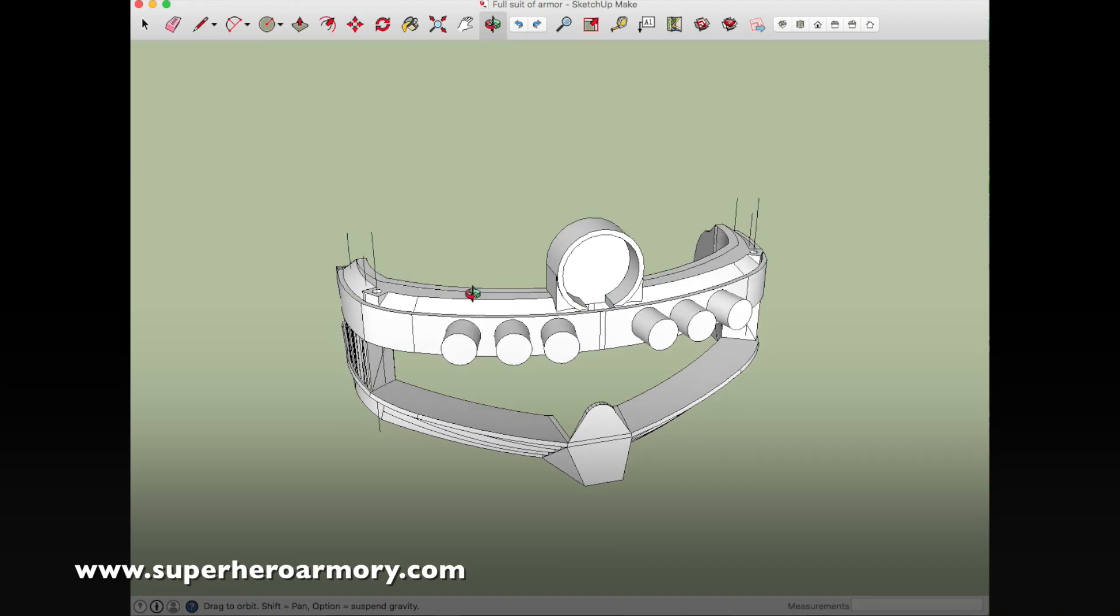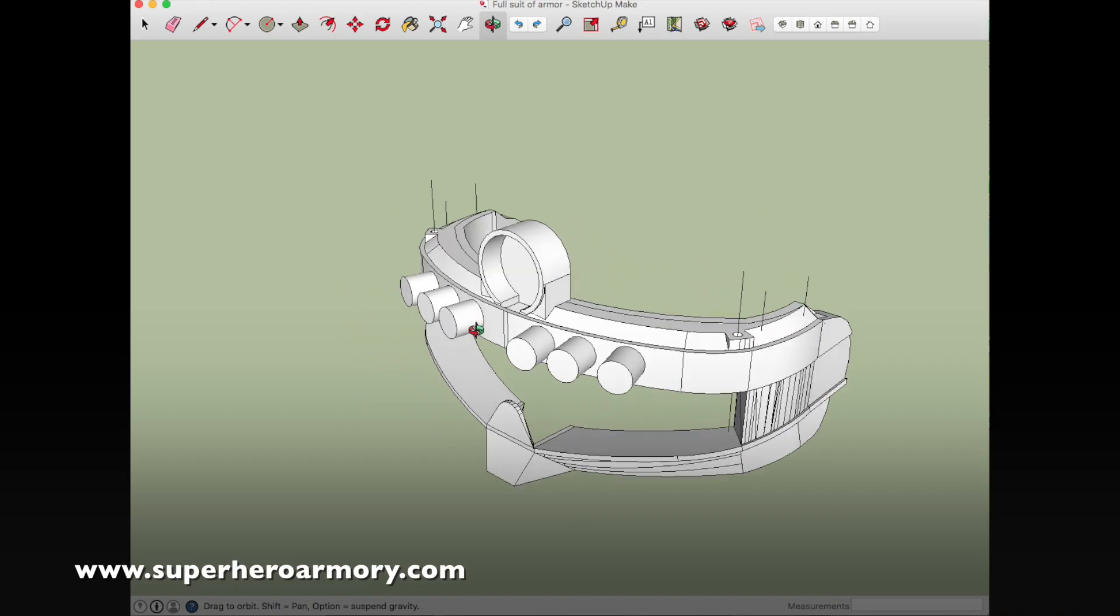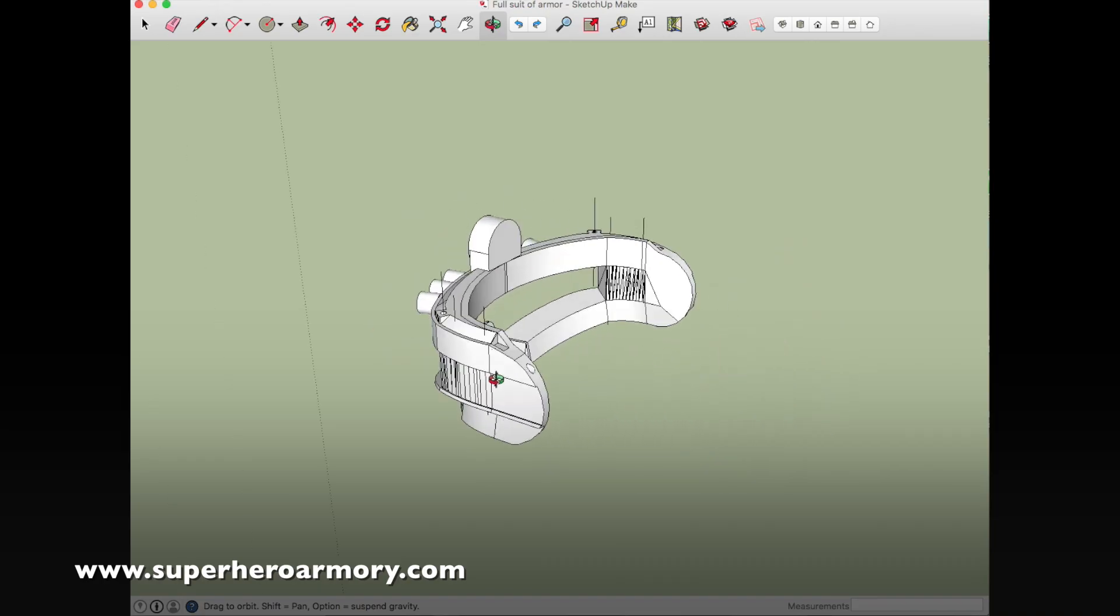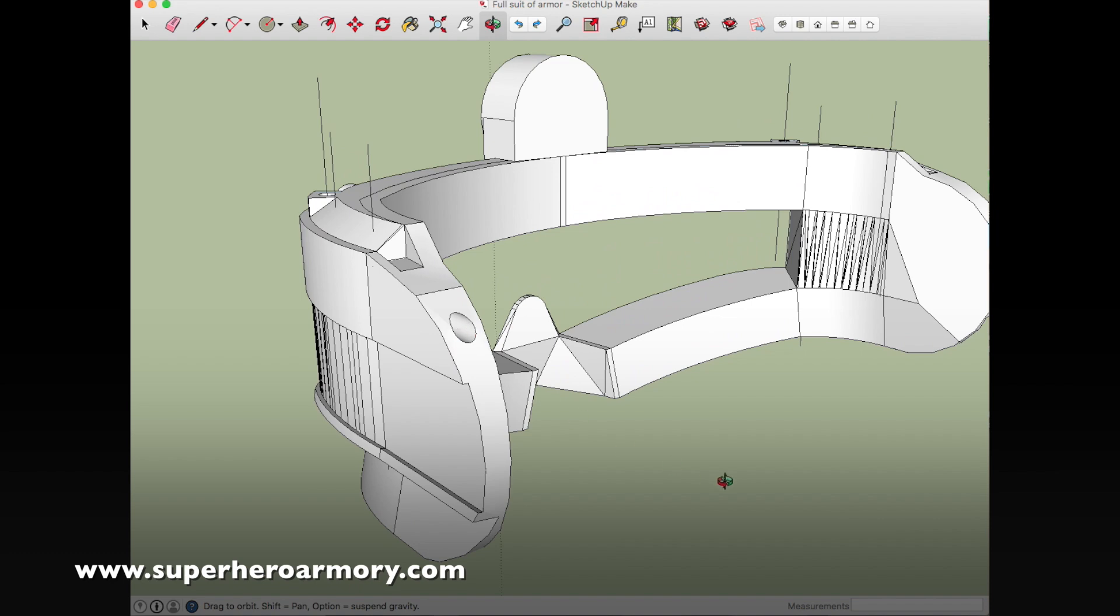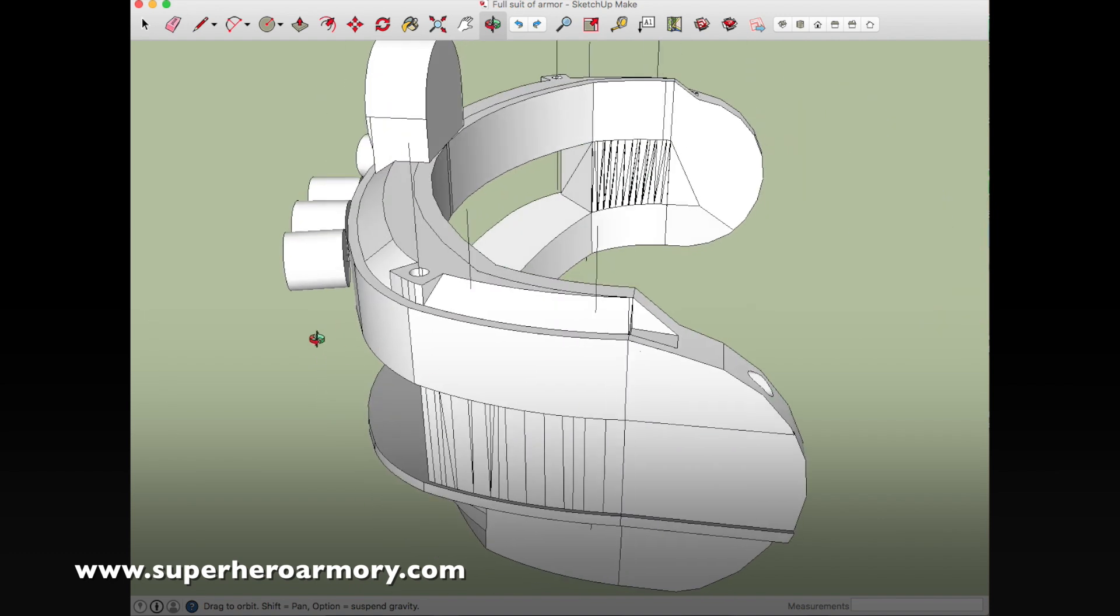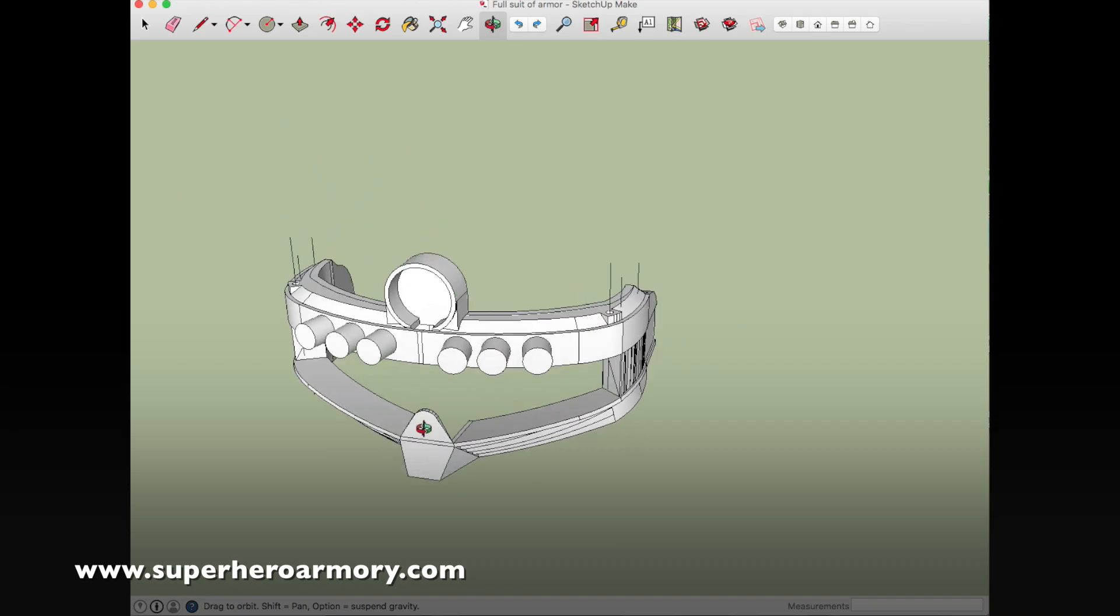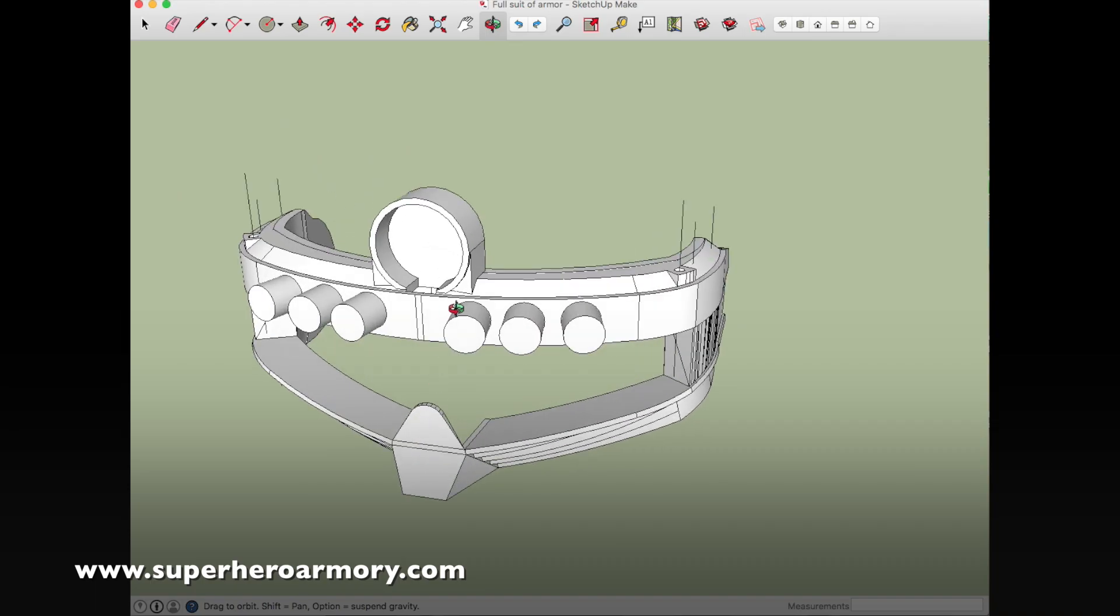This entire top clip is removable so that I can access all the wiring inside. And the power wires will come through and out this little hole here and tie into the rest of the suit. And that's it. So let's start 3D printing the parts now.